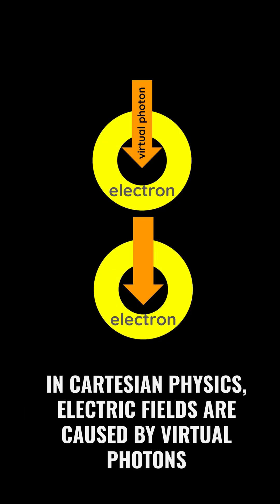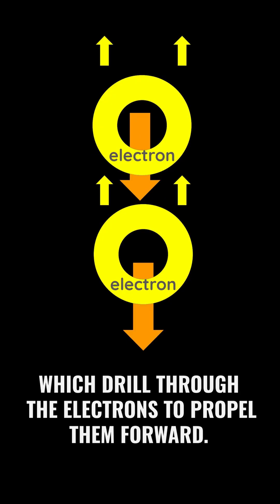In Cartesian physics, electric fields are caused by virtual photons, which drill through the electrons to propel them forward.